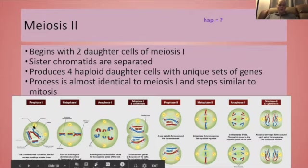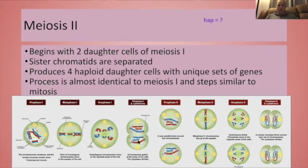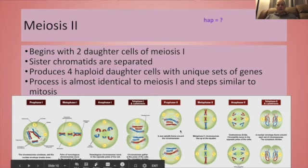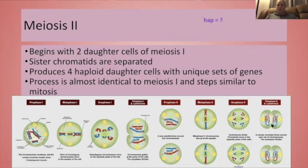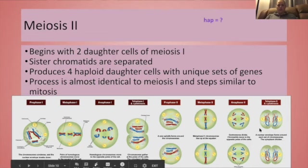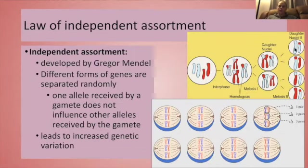So meiosis I had crossing over and homologues were separated, but we still have these sister chromatids held together and they need to be divided apart — that's what happens in meiosis II. We're going to start with these two cells made at the end of meiosis I, the sister chromatids are going to align and be pulled apart, and now we have four individual cells that are all different from one another. Crossing over and the separation of homologous chromosomes during meiosis is going to allow these alleles, these forms of a gene, to be separated randomly and independently from one another — and we call this independent assortment.